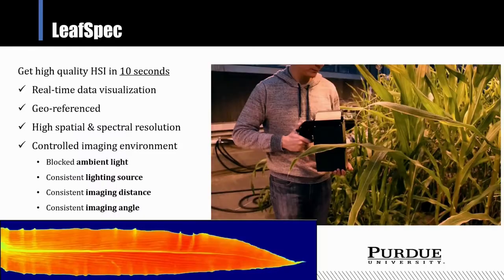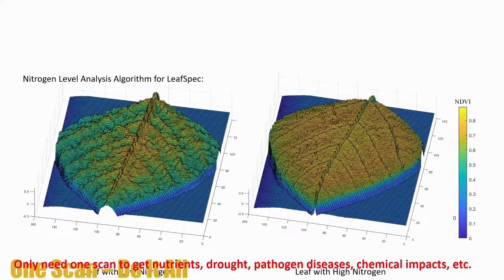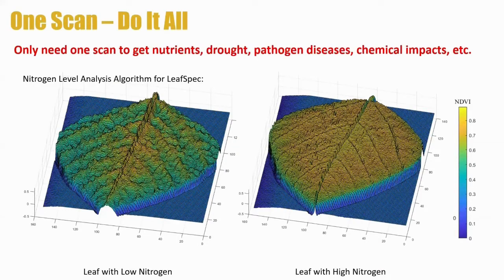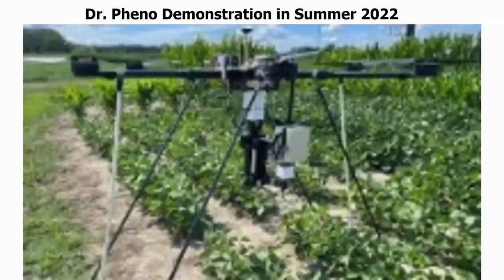LeafSpec gives a very informative image about how the crops are growing. Each pixel has hundreds of different colors and we can achieve one millimeter spatial resolution. But this image doesn't make sense to farmers or plant scientists unless we predict nutrients and disease — we need to get the data. So another big part of my lab's work is building image processing software and models so that with one scan you can immediately get information about nutrients, drought, pathogen diseases, and chemical impacts.